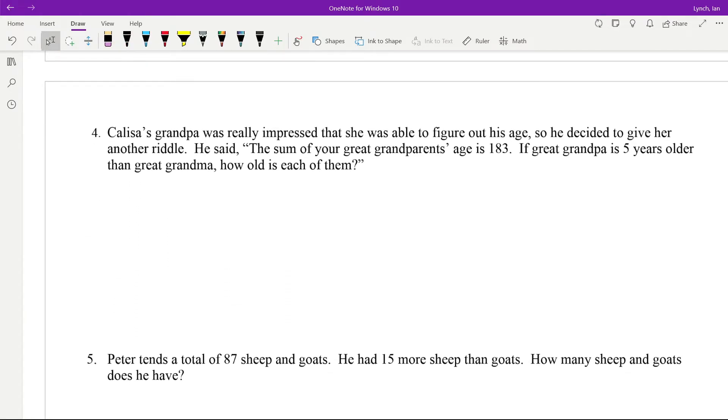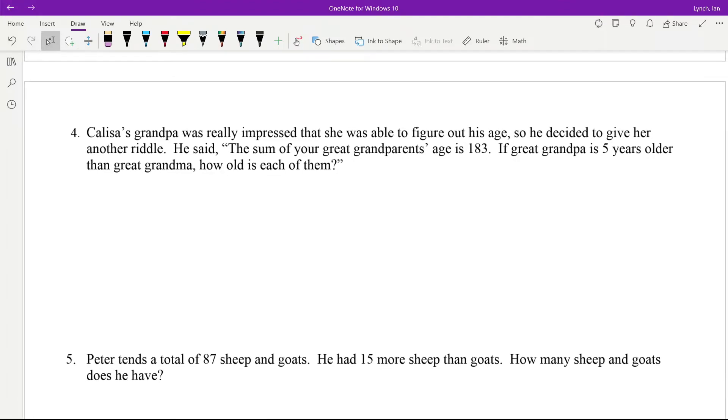Calissa's grandpa was really impressed that she was able to figure out his age. So he decided to give her another riddle. He said, the sum of your great-grandparents' age is 183. And if your great-grandpa is 5 years older than your grandma, how old is each of them? So what we've got to do here is we've got to think about this. So they add up to be 183. So let's say, let's go to grandpa and we'll go X. We'll call it grandpa X. Grandpa is 5 years older than the great-grandma. So we've got grandpa's age. We're going to add that to grandma's age, which is X minus 5. Now, if we add these all together, we get 183 equals 2X minus 5.